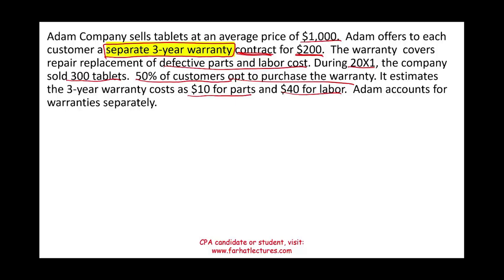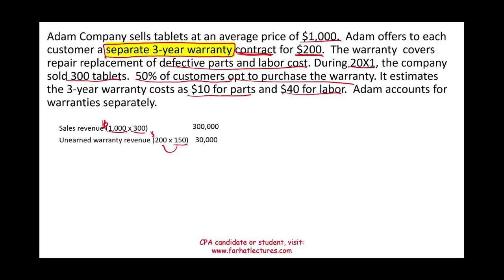Starting with the sales: 300 tablets sold at one thousand dollars each gives total sales revenue of three hundred thousand dollars. Also, 150 warranty contracts were sold at two hundred dollars each, so the unearned warranty revenue is thirty thousand dollars. In total, Adam receives three hundred thirty thousand dollars in cash — three hundred thousand reported as sales revenue and thirty thousand reported as unearned warranty revenue, which is a liability.